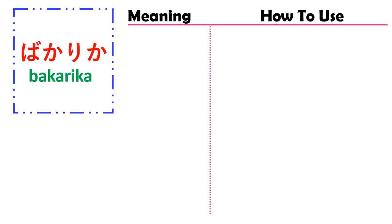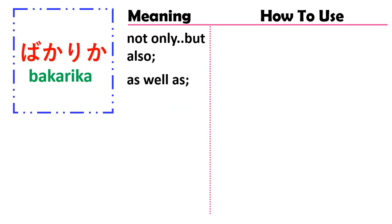Next, we are going to learn about the grammar of ばかりか. Before, we learned about ばかりだ. But now we are going to learn about ばかりか. The grammar of ばかりか has the meaning of 'not only... but also' or 'as well as.' When you translate to English, you can say 'not only... but also,' or alternatively 'as well as.'